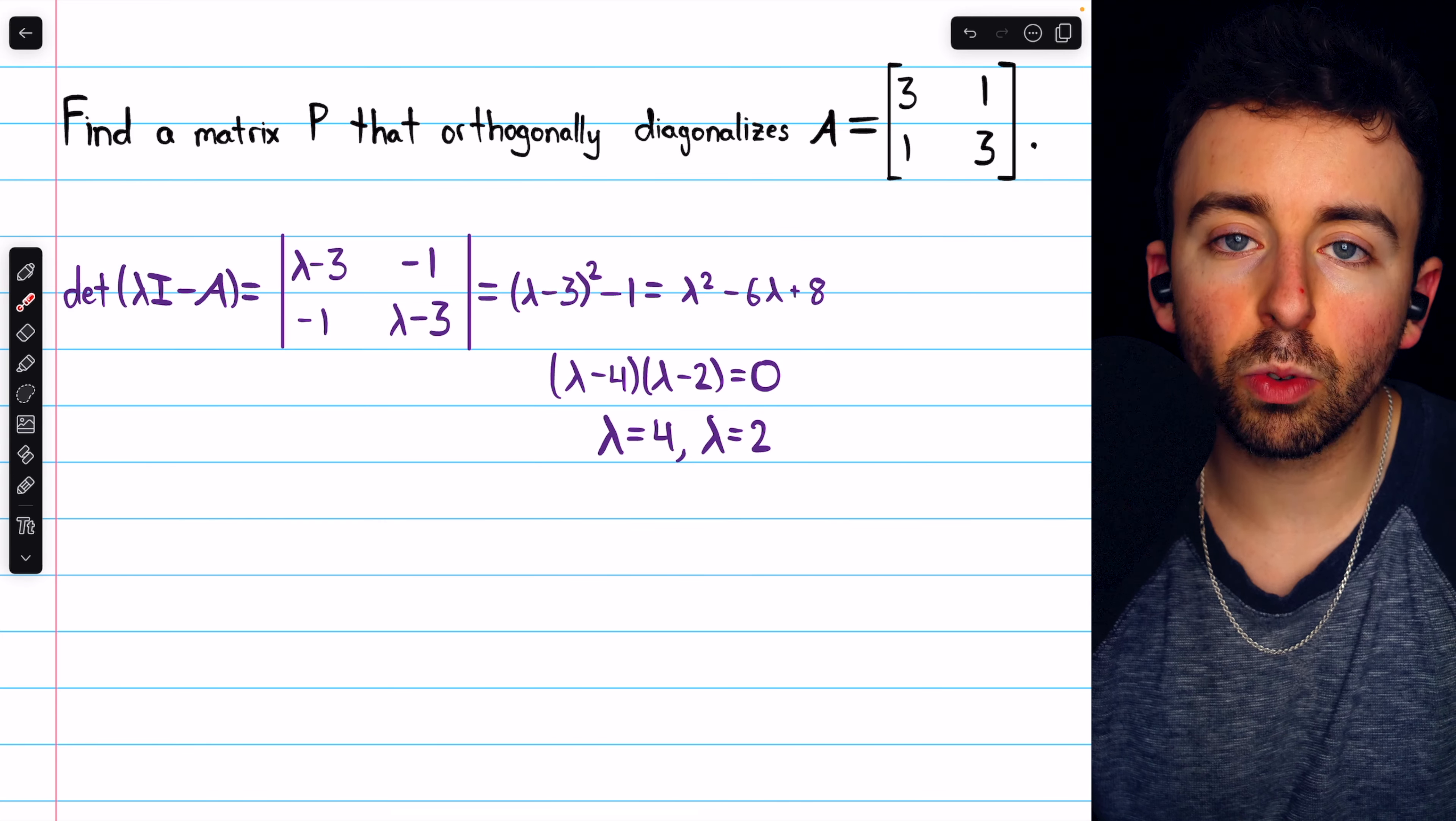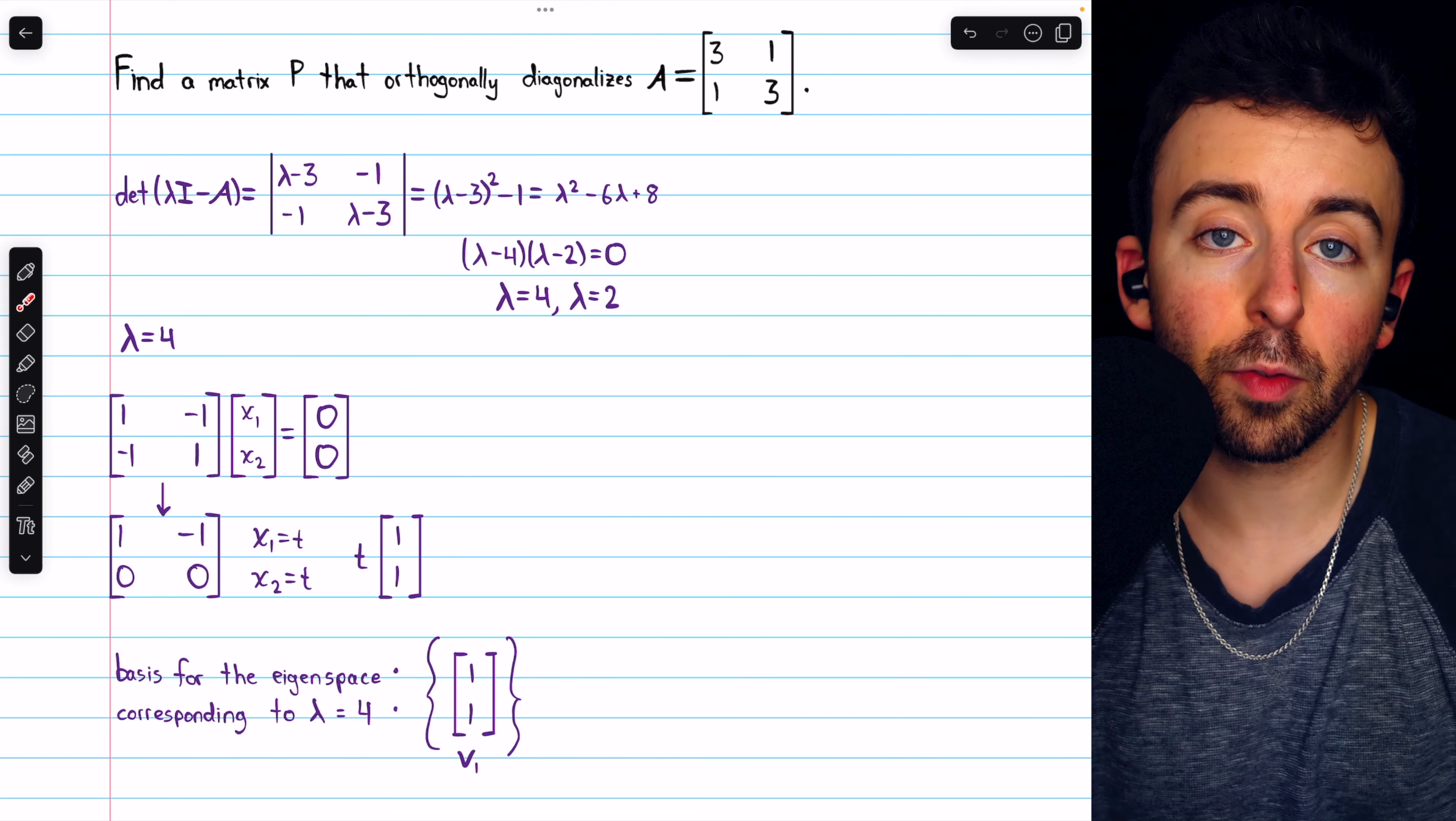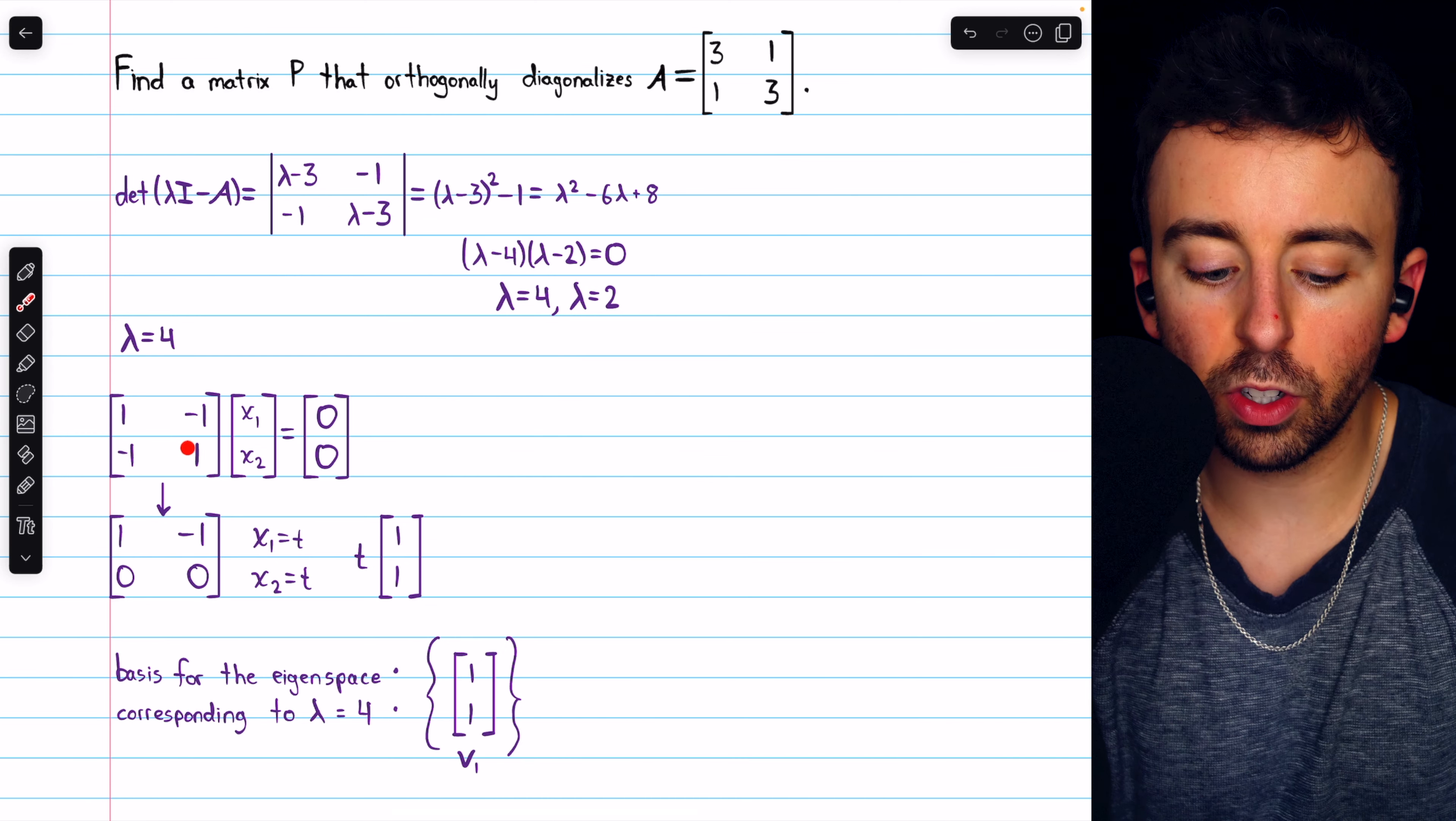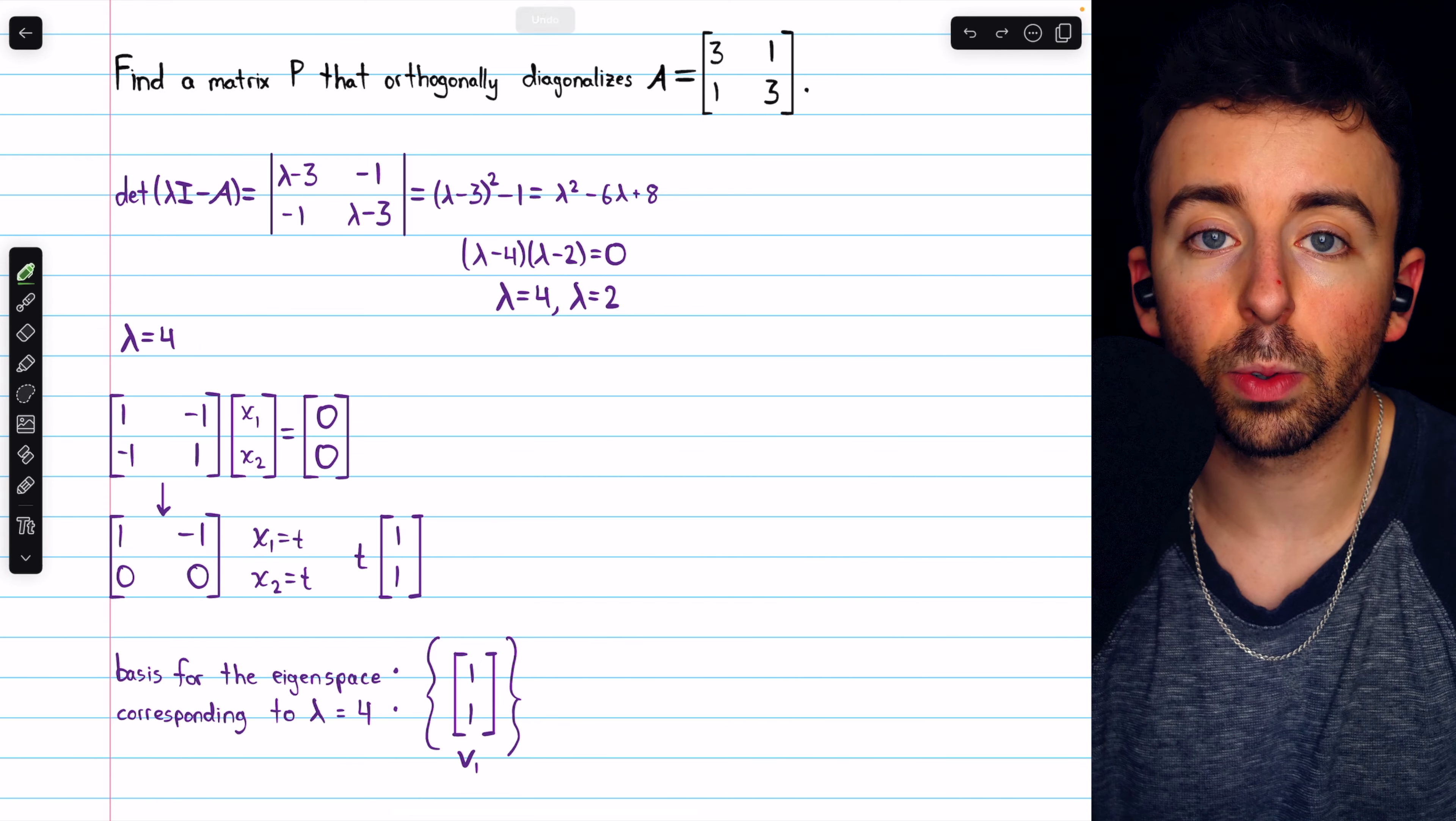With these eigenvalues, we can now find bases for the corresponding eigenspaces. For lambda equals 4, we're just plugging 4 in for lambda in this matrix, and then finding its null space. 4 minus 3 is 1, 4 minus 3 is 1, so that's where this comes from. Then we can just add row 1 to row 2 to get this reduced row echelon form. We see that column 2 has no leading 1, so x2 is a free variable, say x2 equals t.